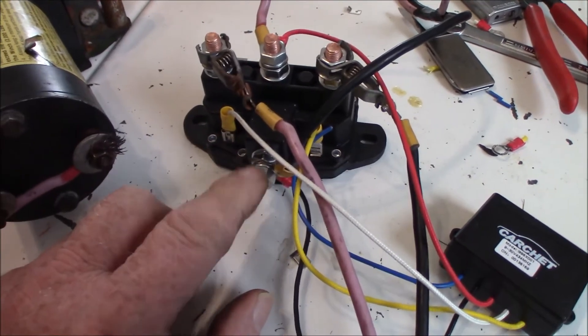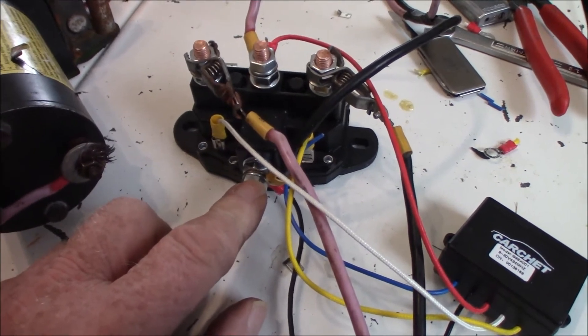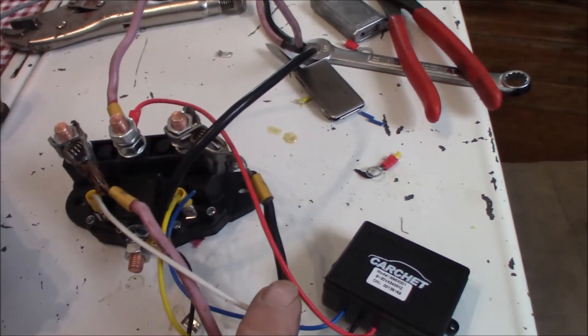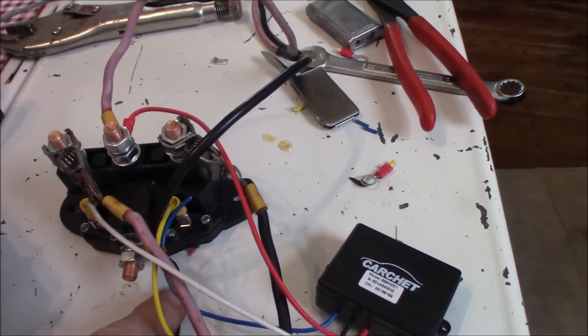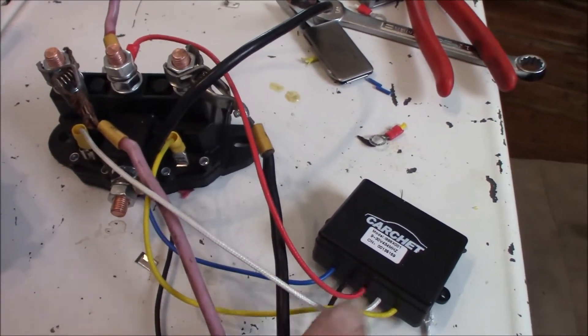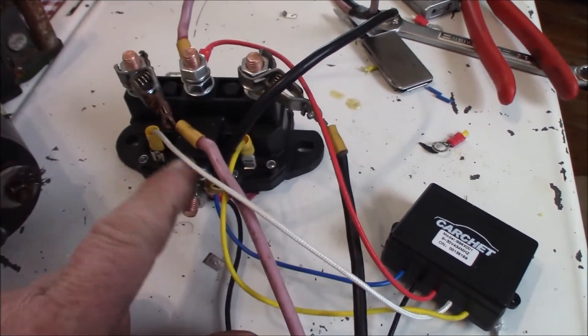Now this wire here is your ground coming from the battery. And the little ground black ground wire here from off your little remote thing goes to the same peg.